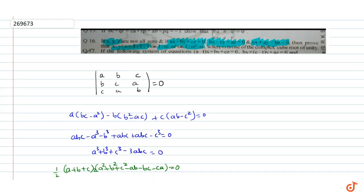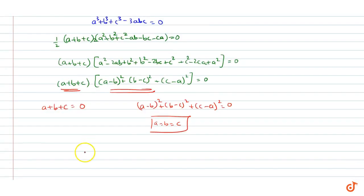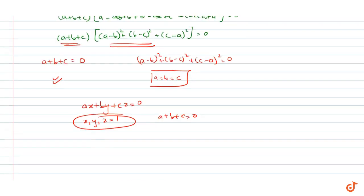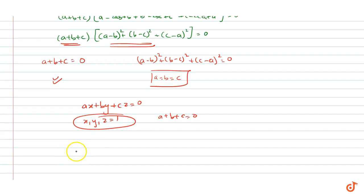अब हमें x, y, z की value find करनी है. तो ax + by + cz = 0 है. अगर x, y और z तीनों को हम 1 substitute करते हैं, तो a + b + c = 0 हो जाएगा जो एक हमारा equation valid है. तो इसका मतलब x:y:z = 1:1:1 हो सकता है — यह हमारा एक root आ गया.